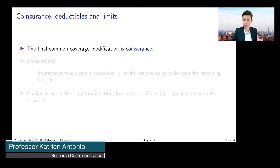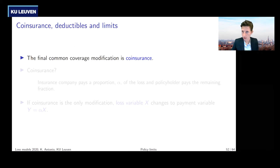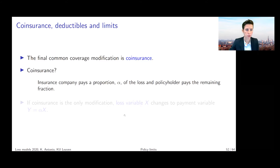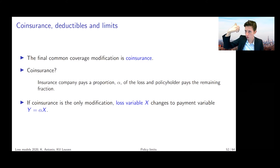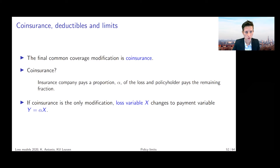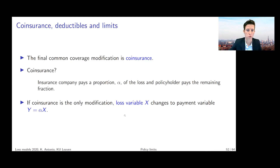The final modification discussed in this chapter is coinsurance. With coinsurance, the insurance company pays a certain proportion alpha of the loss, and the policyholder pays the remaining fraction. This construction appears in certain health insurance plans, particularly in the United States, and also in certain types of reinsurance contracts. Each party pays a certain fraction of the loss.